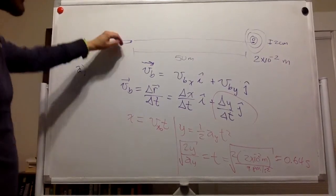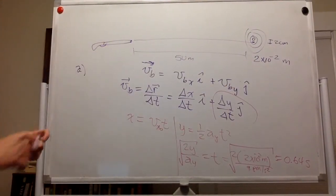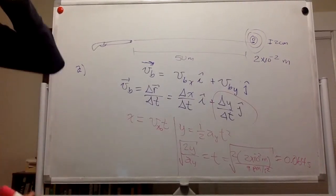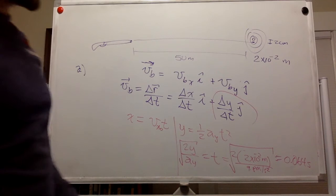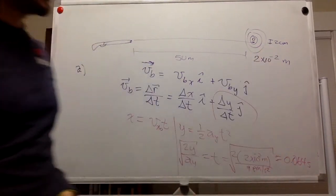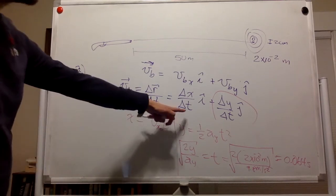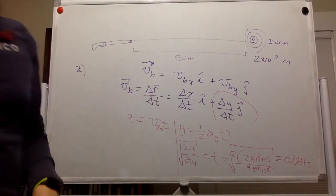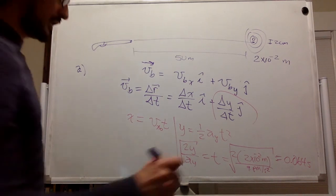That is the time the bullet takes to fall two centimeters from rest — 0.064 seconds. In fact, any object on Earth will fall two centimeters in 0.064 seconds. Now that we have the time, and we know the horizontal distance is 50 meters, we can calculate the bullet's velocity. That was part a, the flight time.